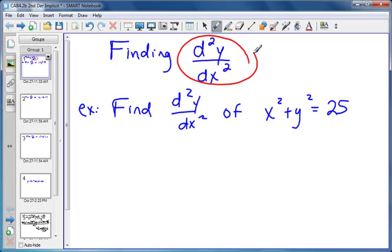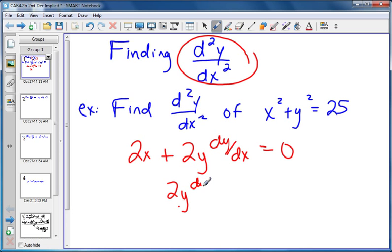Now just like with normal second derivatives, you have to find the first derivative first. So if we take the derivative of this equation using implicit differentiation, we get 2x plus 2y dy/dx is equal to 0. Then we subtract the 2x over and divide both sides by 2y.